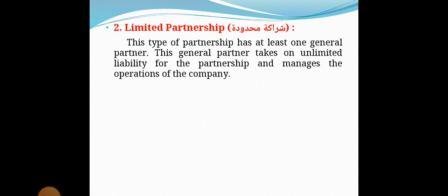The second type is limited partnership. This type of partnership has at least one general partner who takes on unlimited liability for the partnership and manages the operations of the company. يعني هذا النوع من الشراكة له شريك عام واحد على الأقل، هذا الشريك يتحمل المسؤولية غير المحدودة عن الشراكة ويدير كل عمليات الشركة.